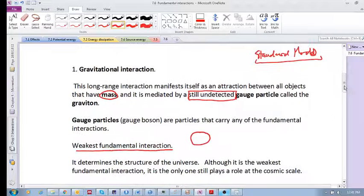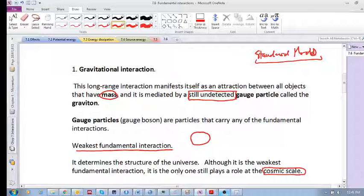is that on the cosmic scale, although it is the weakest, it is the only one that still plays a role at the cosmic scale. That's also due to the fact that the other interactions kind of cancel out on the cosmic scale. And so the only interaction that determines the structure of the universe really is this gravitational interaction.